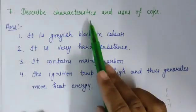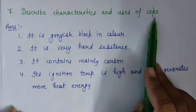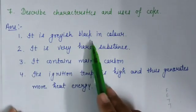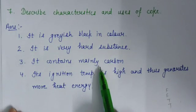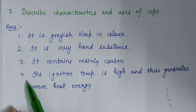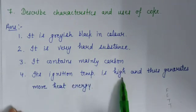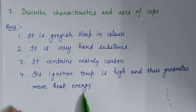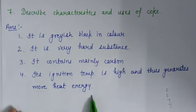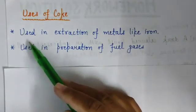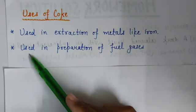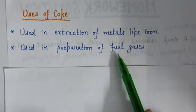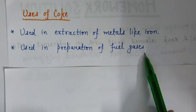Question number 7 is: describe the characteristics and uses of coke. Coke is grayish black in color, a very hard substance, contains mainly carbon, and its ignition temperature is high, thus generating more heat energy. Its uses include extraction of metals like iron and preparation of fuel gases.